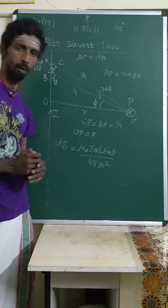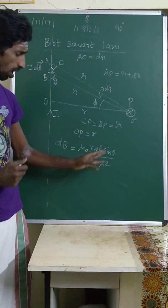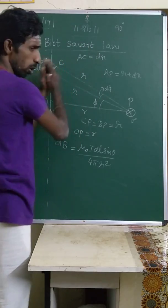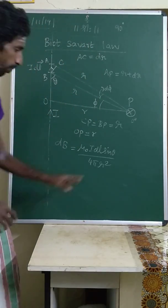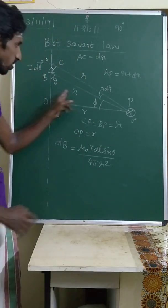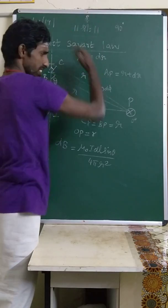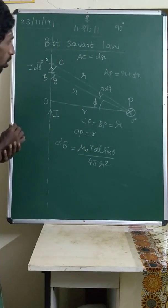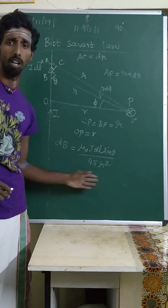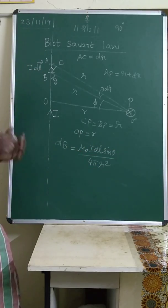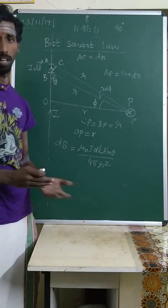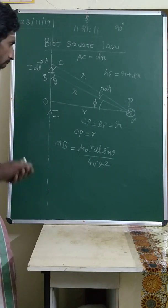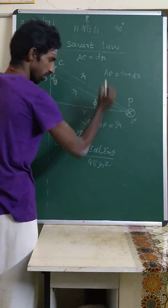In this expression we have too many variables: dl the current element, sin θ — which reduces as the angle increases — and r, which increases as we move along the wire. I cannot use all three variables simultaneously, so I am going to convert all three into a single variable φ. The angle φ is defined as shown.